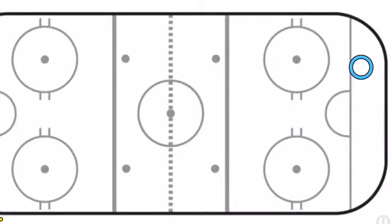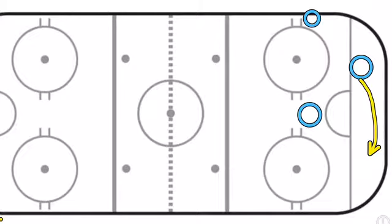You guys got to move in the right direction. If this guy comes all the way to the other side, where does the guy in front of the net go? Behind the net. Where does the guy from the hash marks go? From the net. You're moving to the open space, you're moving to support the guy.